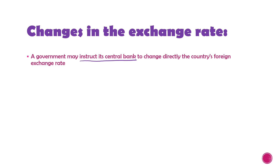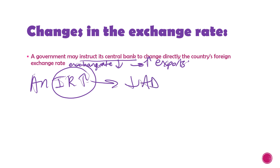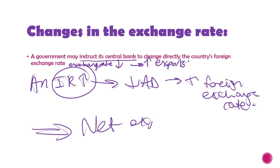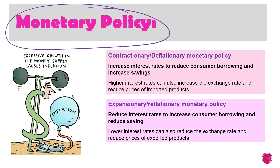Sometimes a government may instruct its central bank to directly change the country's foreign exchange rate. If the government wants the exchange rate to decrease, it encourages a rise in exports. An increase in interest rates will decrease aggregate demand, encouraging an increase in foreign exchange rates, at which point net exports will decrease because there will be an increase in the price of exports and a decrease in the price of imports.